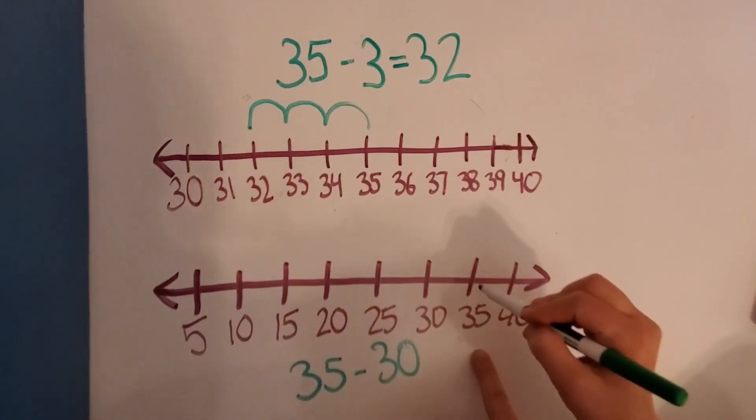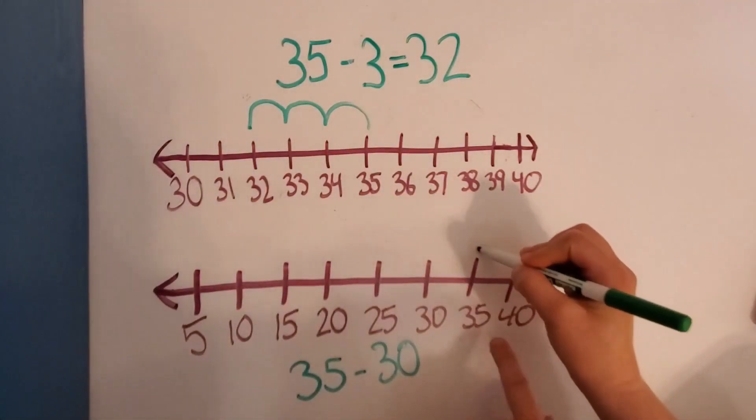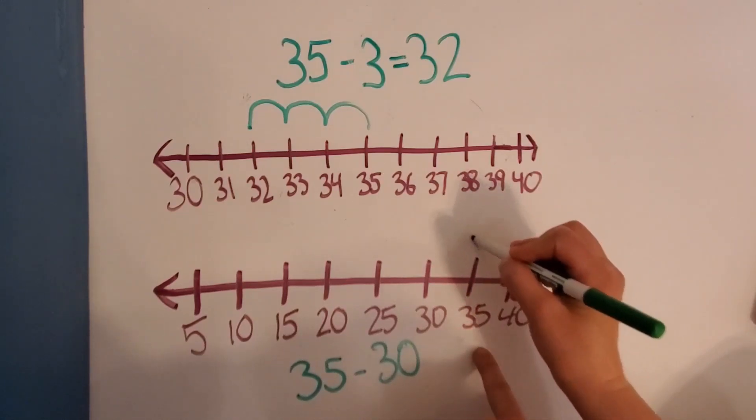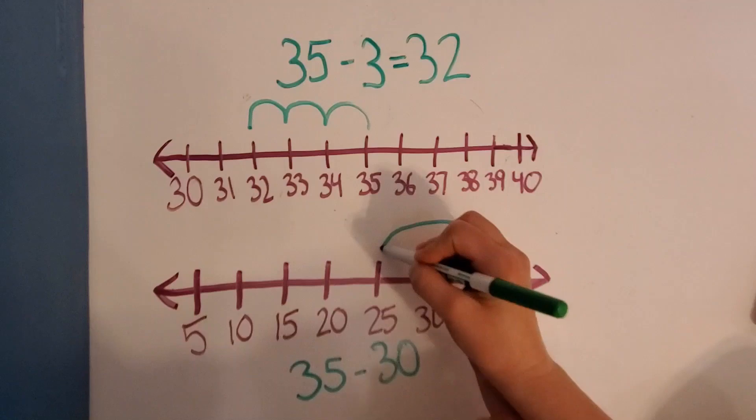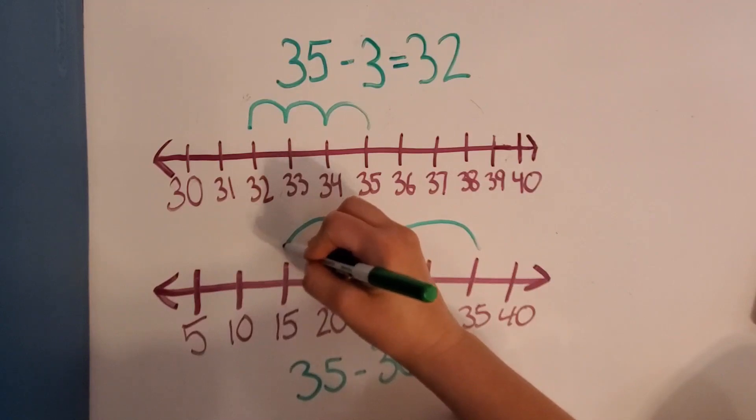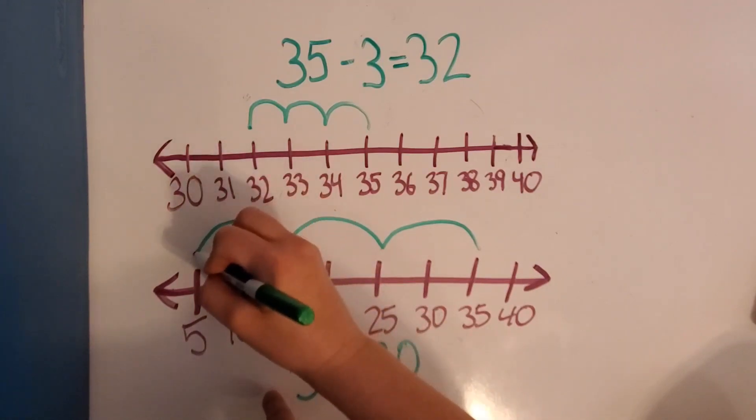Okay, so we'll start here. Then we're going to go back 10. So 35 back 10 is 25. Then 25 back 10 is 15. And then 15 take away 10 is 5, right?